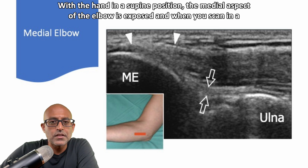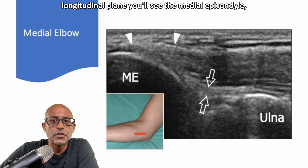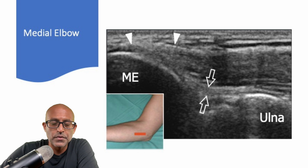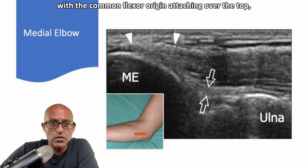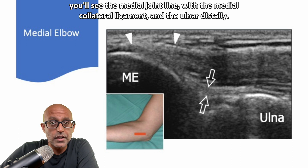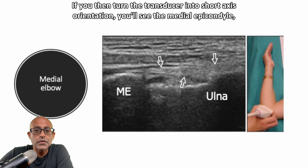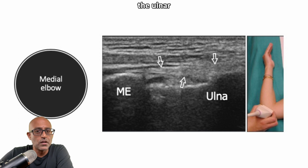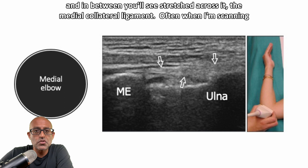With the hand in a supine position, the medial aspect of the elbow is exposed. When you scan in a longitudinal plane, you will see the medial epicondyle with the common flexor origin attaching over the top. You'll see the medial joint line with the medial collateral ligament and the ulnar distally. If you then turn the transducer into a short axis orientation, you'll see the medial epicondyle with the ulnar, and in between, you'll see the medial collateral ligament stretched across it.